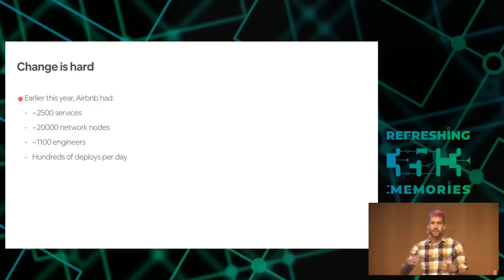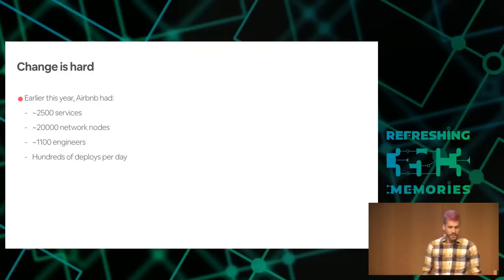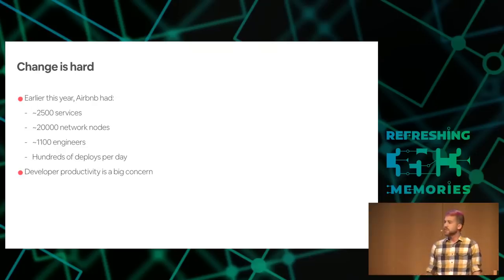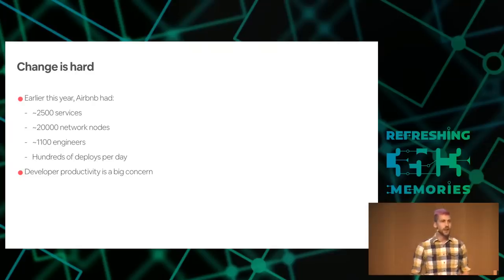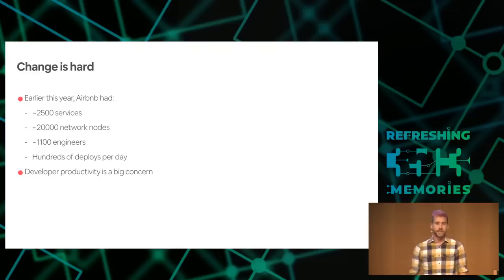Furthermore, because of this highly service-oriented architecture, there's a lot of complex interconnectivity, so determining where the zones should be was difficult in itself. Developer productivity is also a big concern — if you have over a thousand engineers writing code every day and you slow them all down by five or ten percent, that's actually a really expensive thing to do and it's not something that's going to fly.